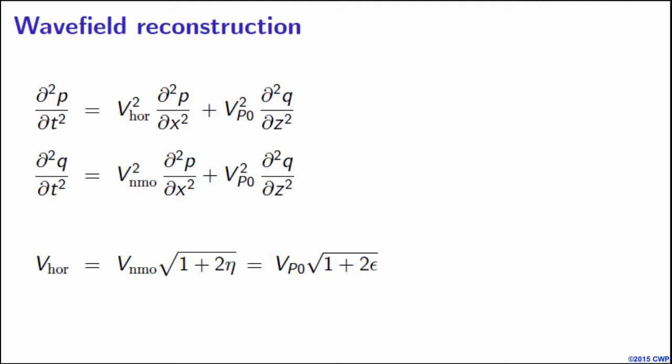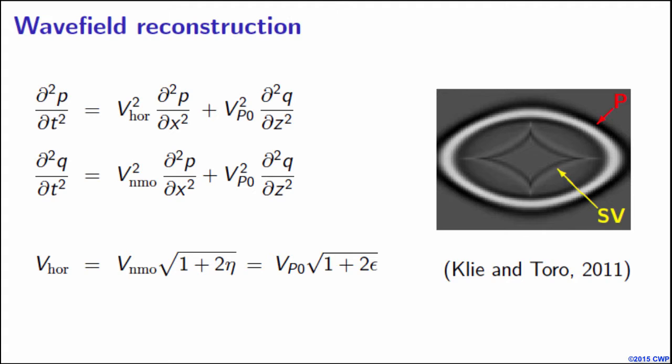This is a coupled system of two equations. You all saw it many times yesterday. It propagates a vector wavefield that has two components, P and Q. Both components have wavefields that kinematically accurately match P waves in transversely isotropic media and have the shear wave artifact caused by setting V_S0 to zero, which can be eliminated in pseudo-acoustic imaging just by placing sources and receivers in the medium where epsilon equals delta, and therefore V_NMO equals V_horizontal.